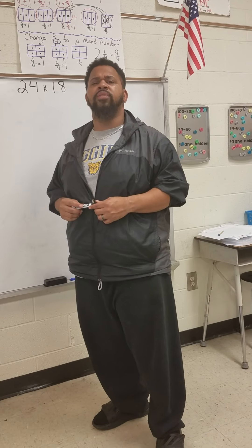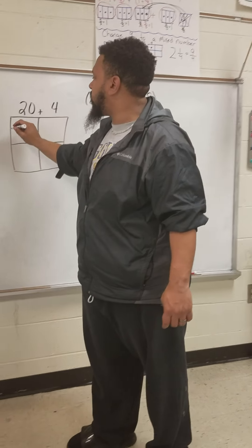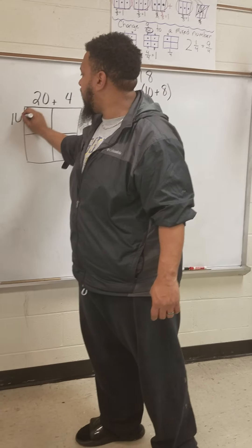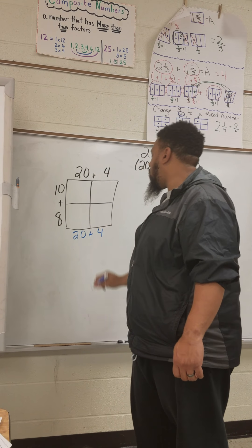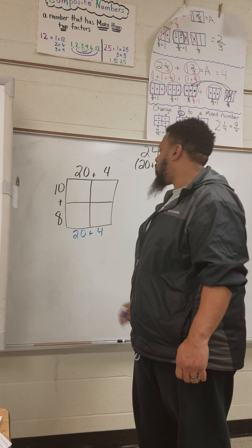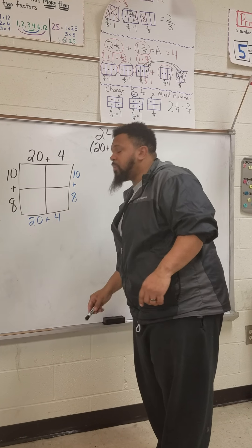After we decompose these numbers, we can start on the box method. We need to draw a box — hence the name box method. So 20 plus 4 goes on the top, and then 10 plus 8 goes on the side. I like to teach my kids that opposite sides are equal. So the opposite side is also 20 plus 4, and the opposite side is also 10 plus 8.